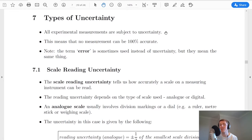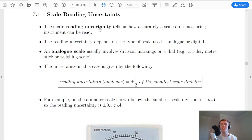Now the first thing to remind you of is that when you're doing experiments, all measurements will be subject to uncertainty. This means that no measurement that you take can be 100% accurate, and we're going to look at the four types of uncertainty which cause that. Remember the term error can also be used instead of the word uncertainty, but they mean the same thing.